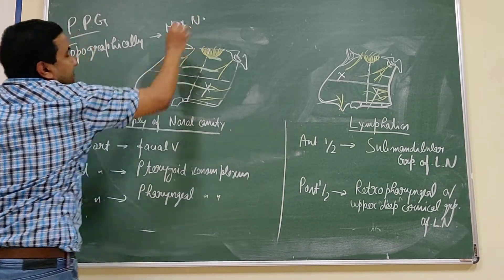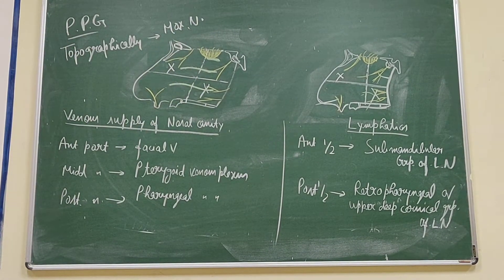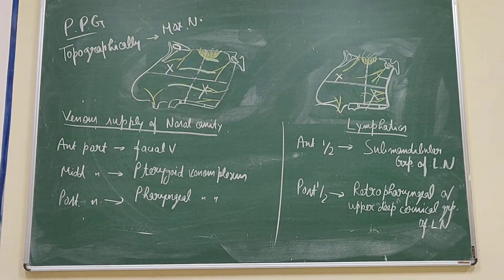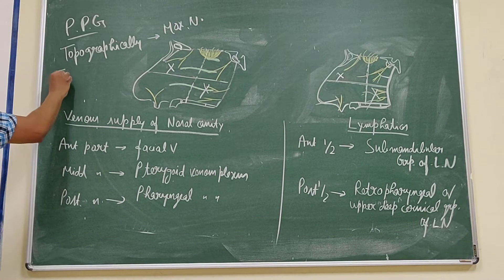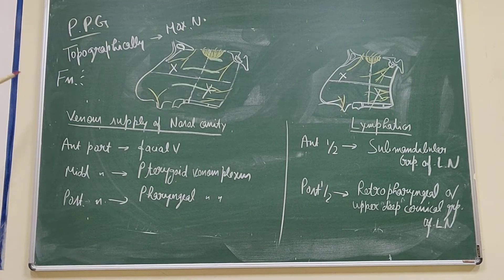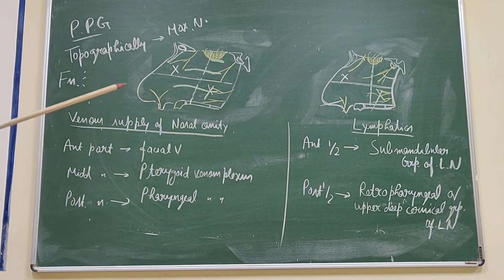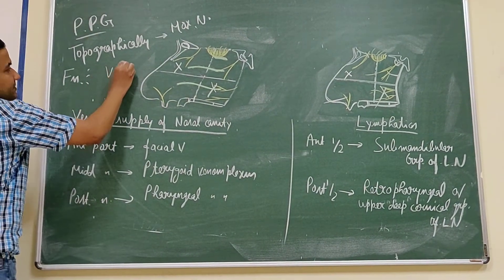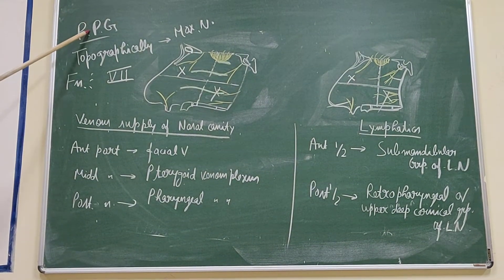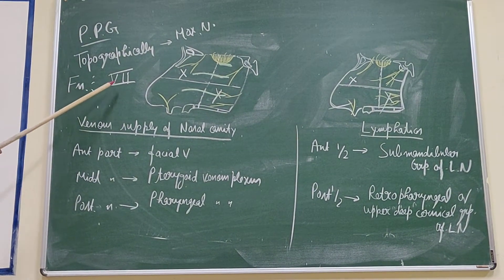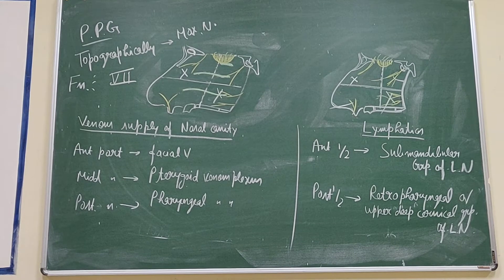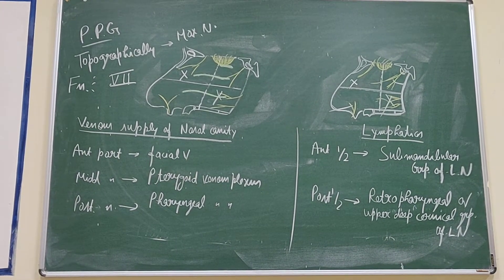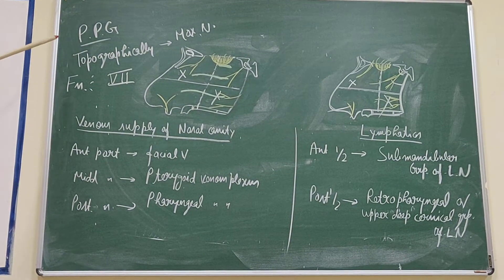The pterygopalatine ganglion is hanged from the maxillary nerve by two roots. But functionally, the preganglionic fibers for nasal cavity secretion come from the facial nerve. So this ganglion — the pterygopalatine ganglion — is functionally related to the seventh cranial nerve, that is the facial nerve.